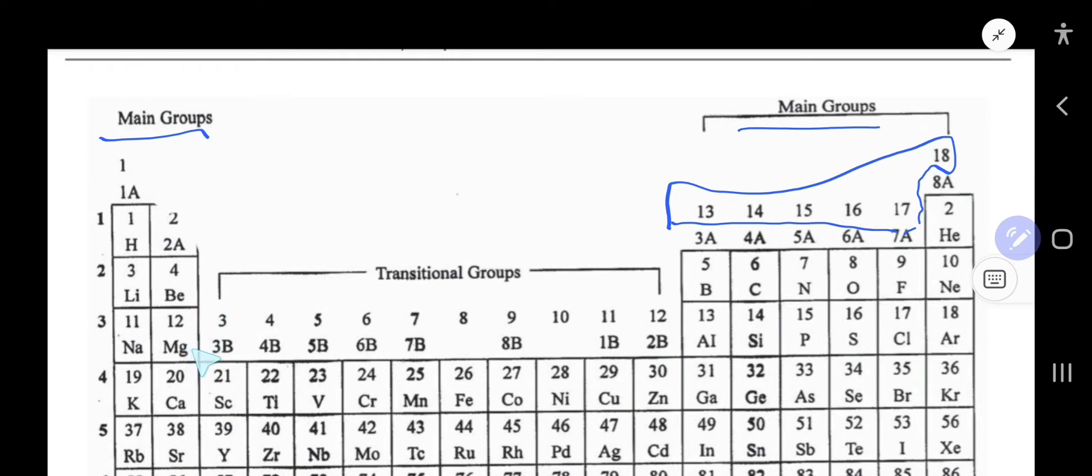Magnesium is an element of group 2A or 2. So group number equals valence electrons, that is 2. For 2A, just consider the number. Letter A, the subgroup designation, will be cancelled. So we get 2.